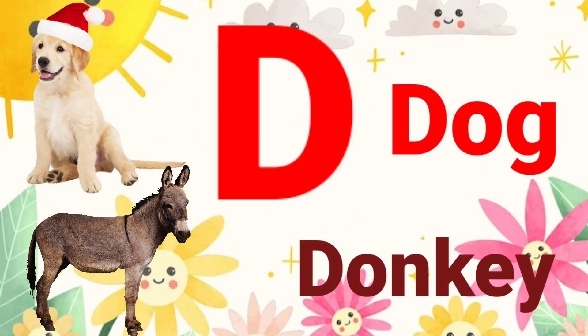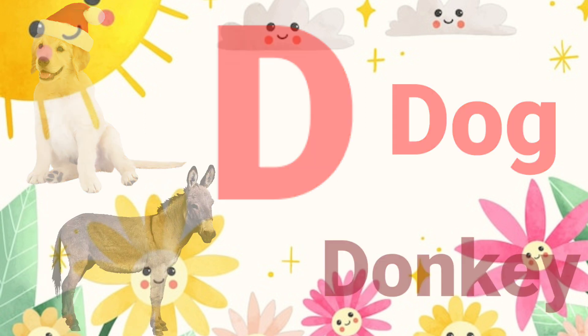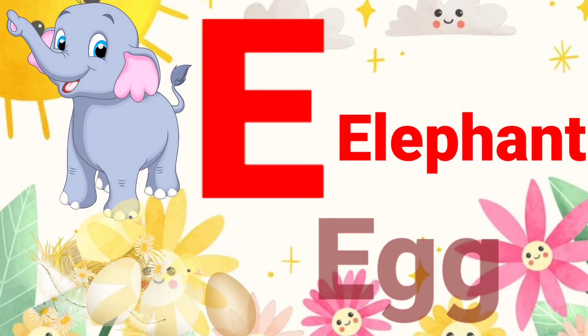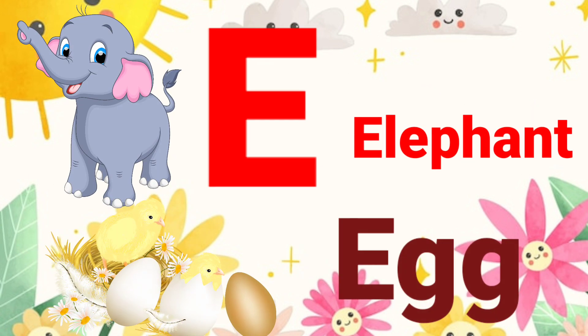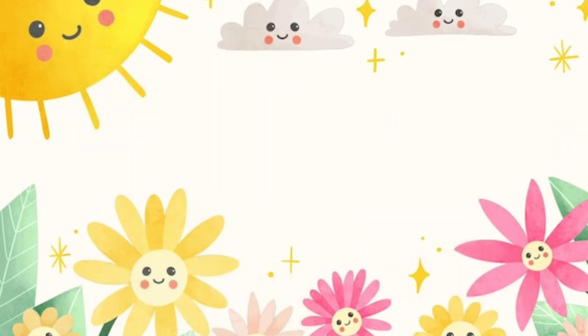D. D for Dog, D for Dungie. E for Elephant, E for Egg.